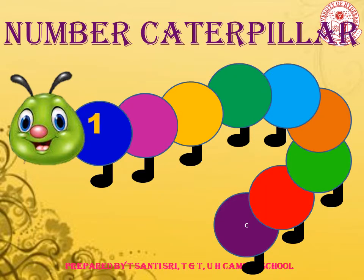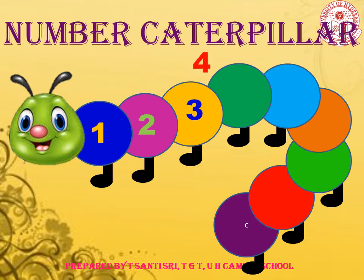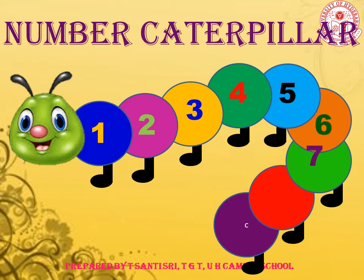Look at the beautiful caterpillar. The caterpillar is having numbers on it. Observe the numbers clearly. We have here 1, 2, 3, 4, 5, 6, 7, 8, and 9. We have 9 numbers on the caterpillar. Observe the numbers clearly — we have some questions on these numbers coming next.